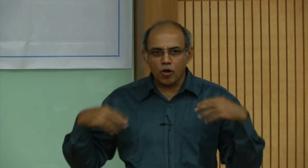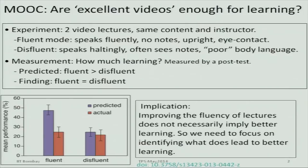As teachers we are always focused on improving our own delivery — saying I didn't do a good job of explaining that part, I need to improve that part. But the point this experiment makes is that instead of focusing on our own delivery so much, we need to start focusing on what makes the student learn better. We need to change from an instructor-centric way of teaching to a student-centric way of teaching and learning.